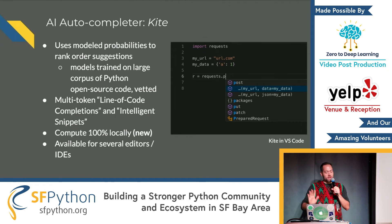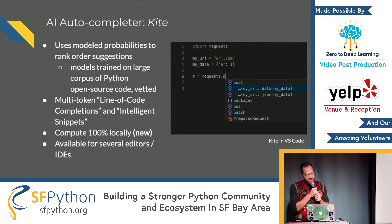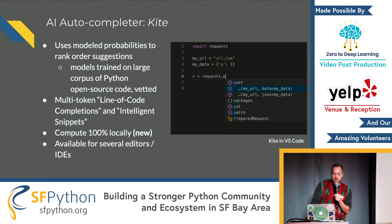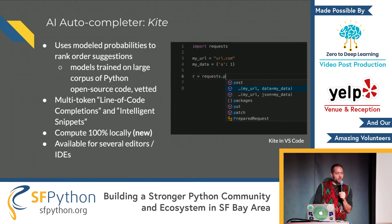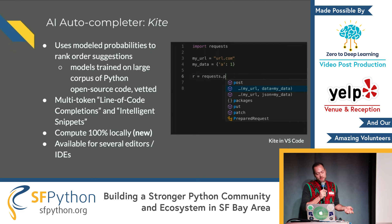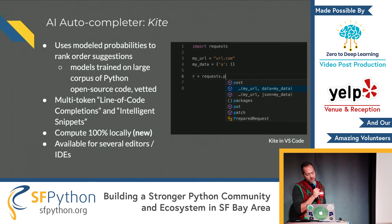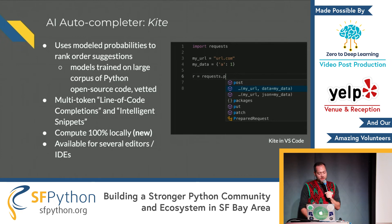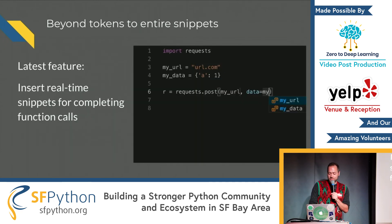Another one is Kite — full disclosure, I'm working with the guys from Kite, and some of them are here tonight if you want to talk to them. They're using essentially a very similar idea: modeling probabilities, combining different models, training on a large corpus of open source code. They can do multi-token line-of-code completions and intelligent snippets, so they can go a little bit farther. And they compute 100% locally.